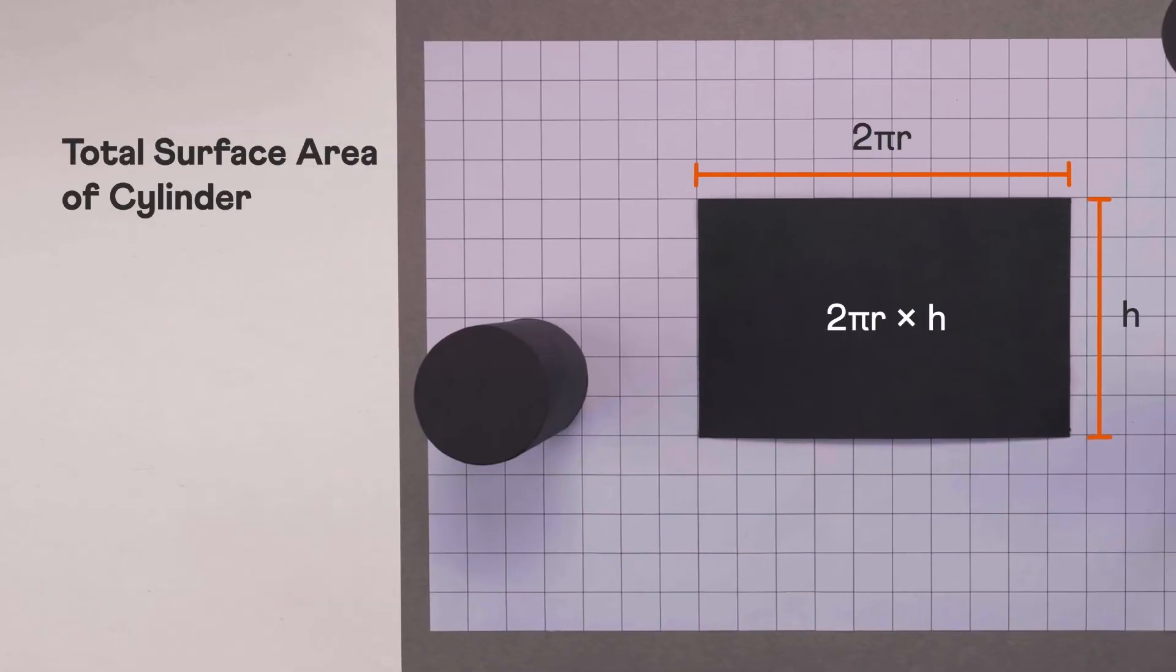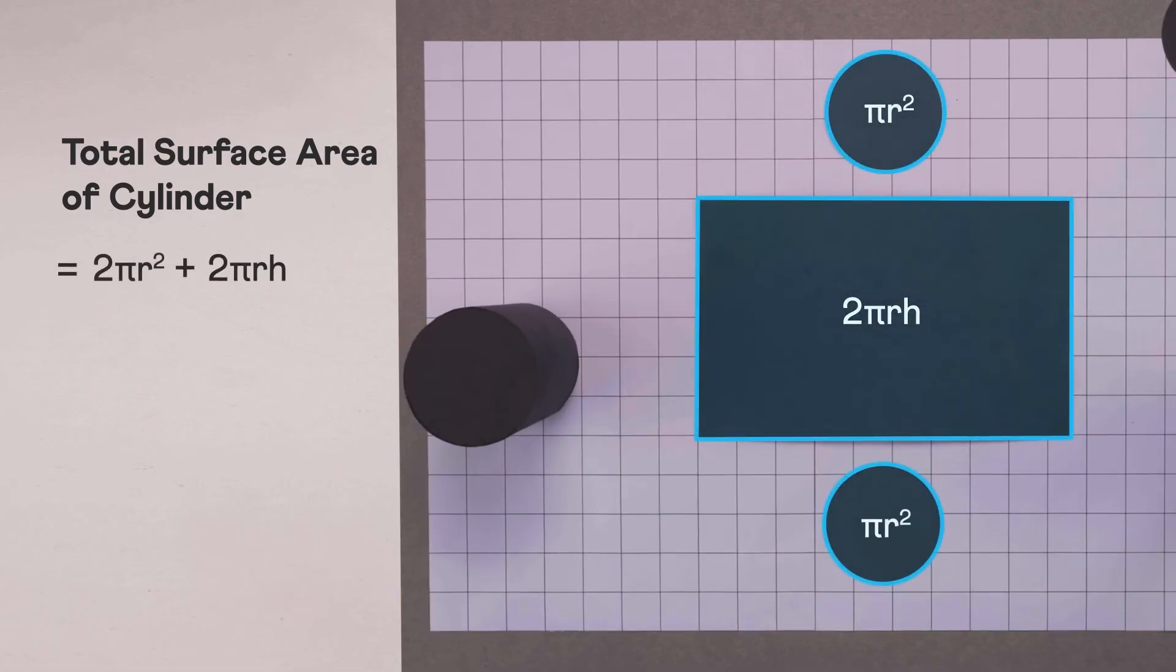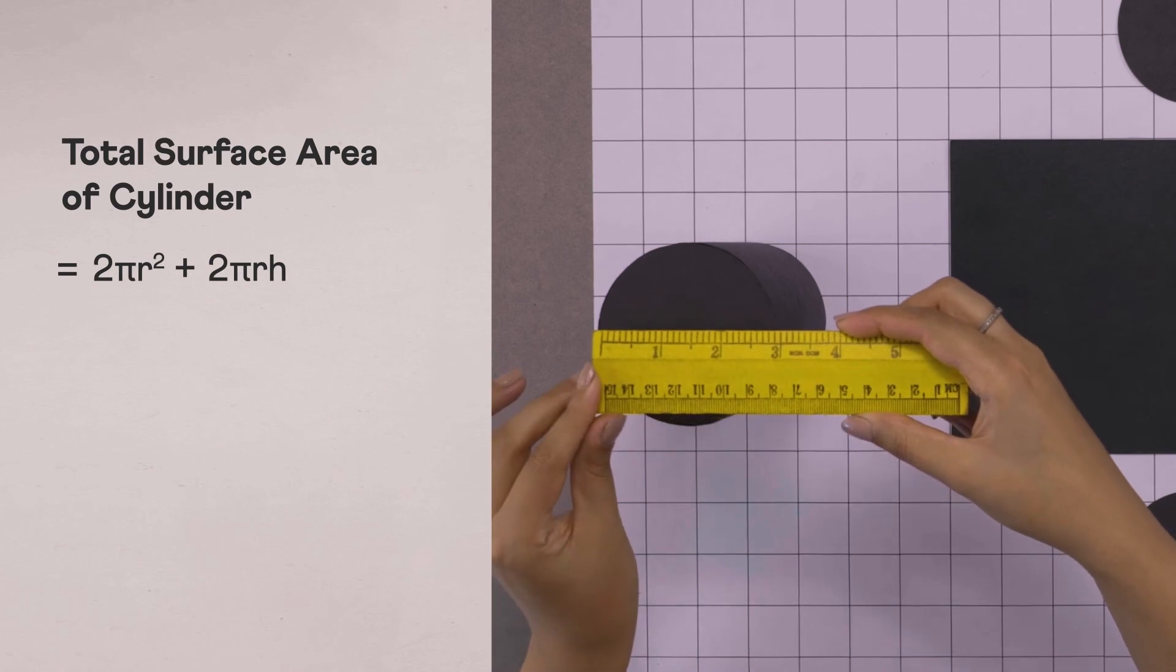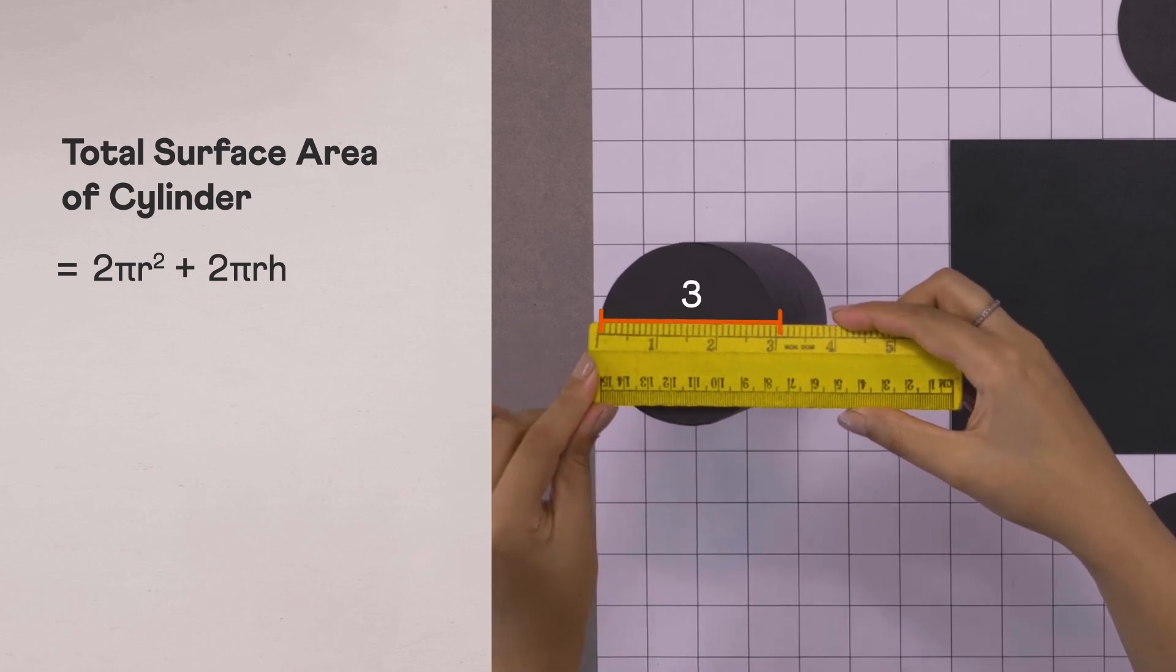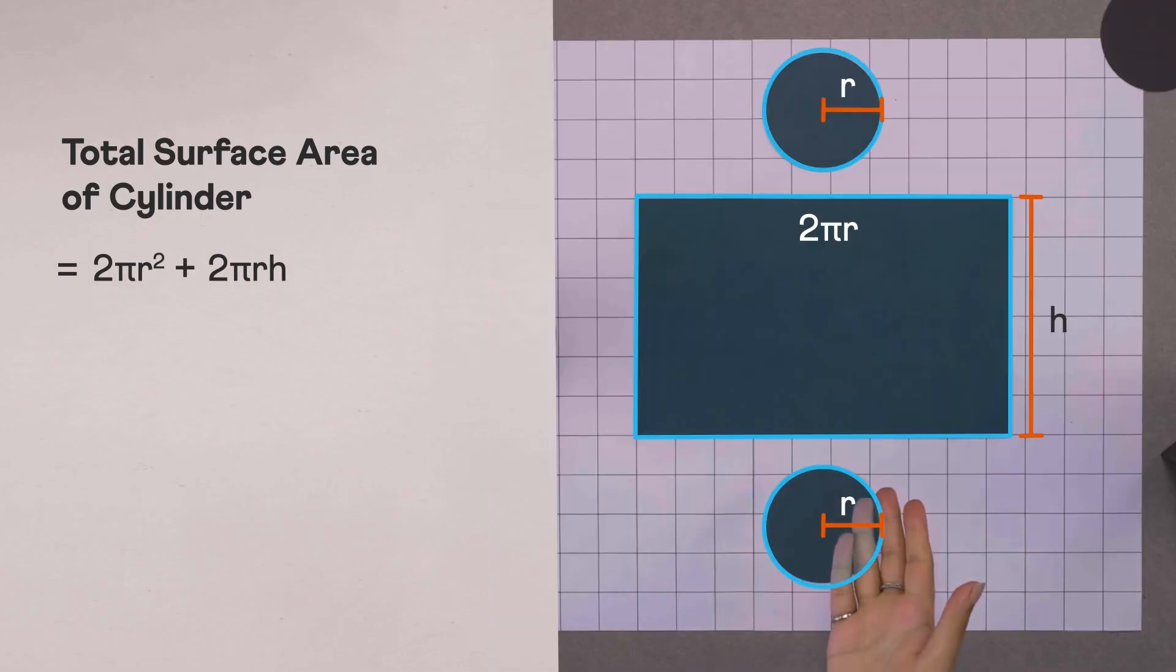So the total surface area of any cylinder is the area of the two circles plus the curved surface area. For example, the diameter of this cylinder is 3 units, so its radius is 1.5 units and its height is 6 units. Let's plug in these values, we get the total surface area of this cylinder as 22.5 pi square units.